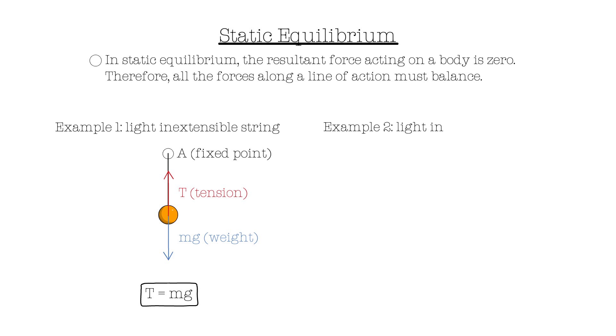Now, what if we had more than one string? In example two, we have a ball attached to two fixed points A and B, using two light inextensible strings. Firstly, we can mark the weight. Then, we have the tension forces acting along the two strings at an angle theta from the horizontal.